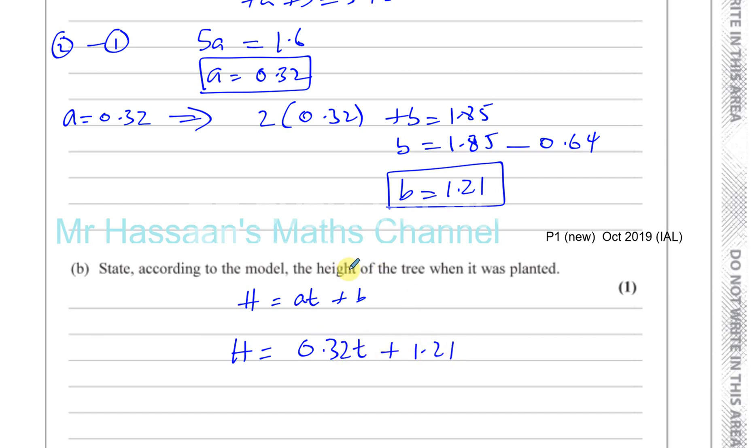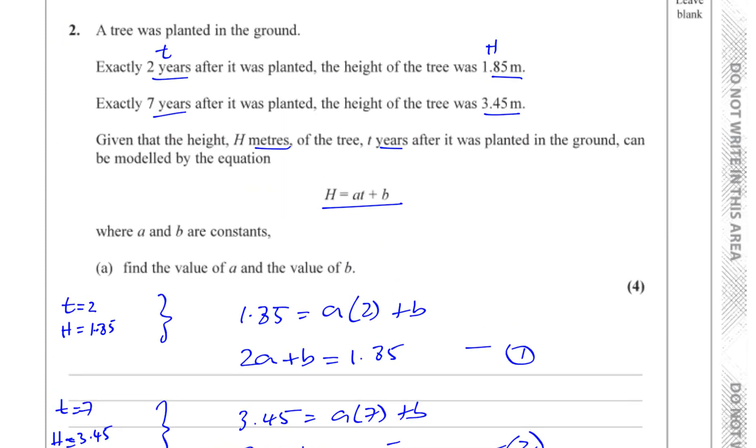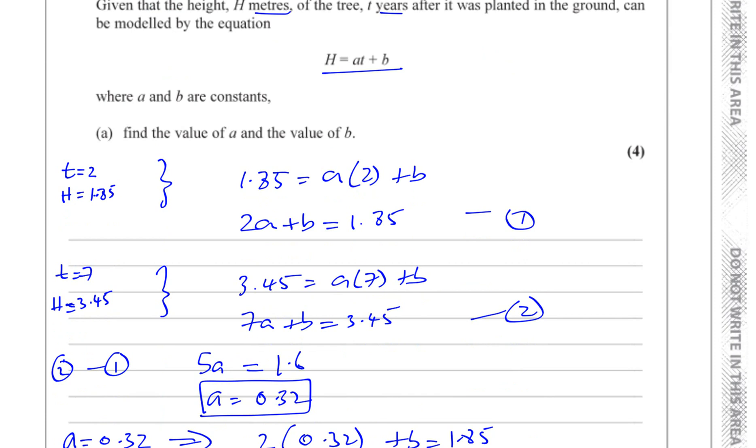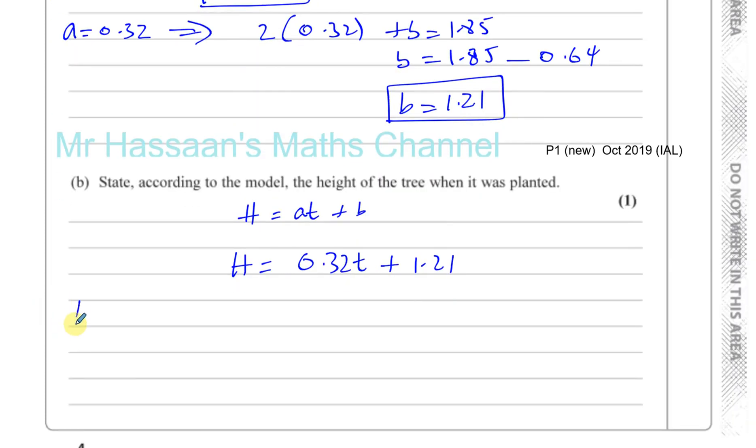T is the time after the plant was planted, so when it was planted, t = 0. So H = 0.32 times 0 plus 1.21, which means H = 1.21. You should state the units here: 1.21 meters.